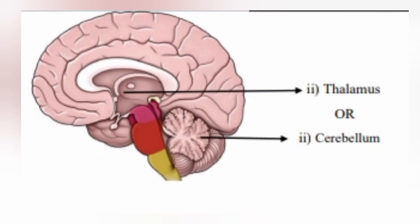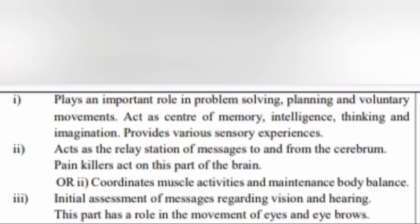Question 13A: Redraw the diagram, label the parts correctly if there is any mistake, and write their functions. Correction: Thalamus labeling. Part 1: Plays an important role in problem solving, planning, and voluntary movements. Acts as the center of memory, intelligence, thinking, and imagination. Provides various sensory experiences. Part 2: Acts as the relay station of messages to and from the cerebrum. Painkillers act on this part of the brain.